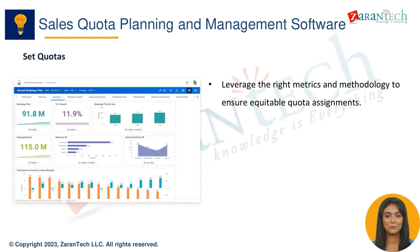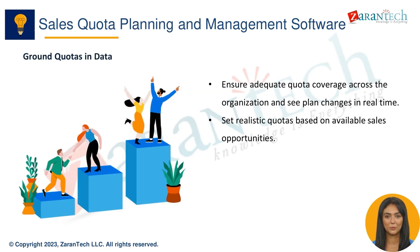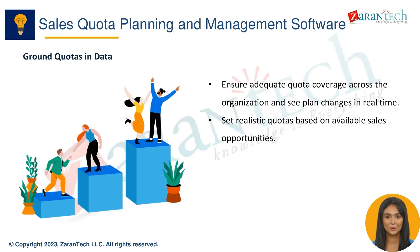A core strength of Workday Adaptive Planning is enabling organizations to set equitable, data-driven quotas across the sales organization. The right metrics and methodologies ensure quotas are allocated fairly, grounded in actual data — both historical sales data and current opportunity data. This ensures adequate coverage across the organization and provides visibility as plans change.